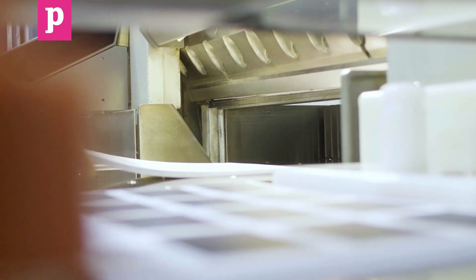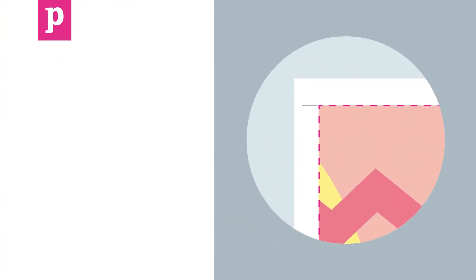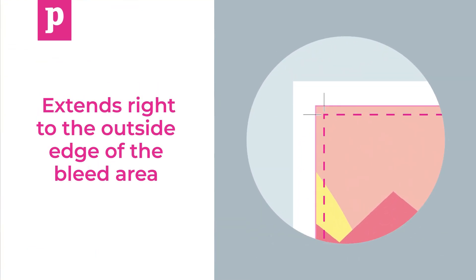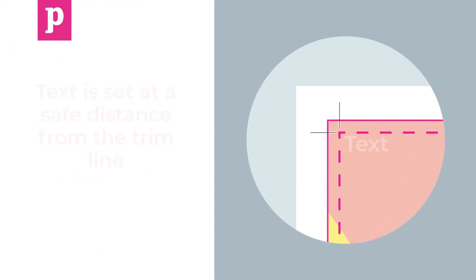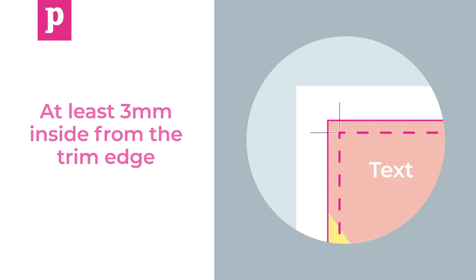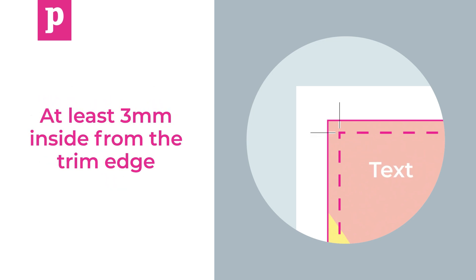When preparing a document for print, it's really important to make sure that the artwork extends right to the outside edge of the bleed area, and that any text is set at a safe distance from the trim line. We would suggest at least 3mm inside from the trim edge.